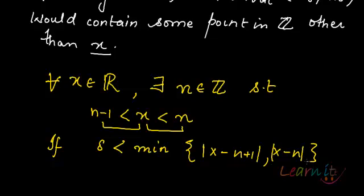if I take delta to be even less than the minimum of these distances, then what will happen? Let me figure it out for you.